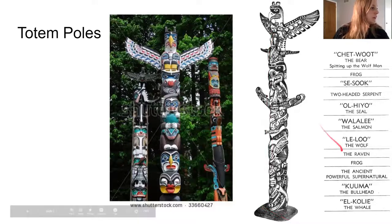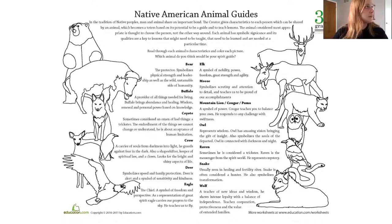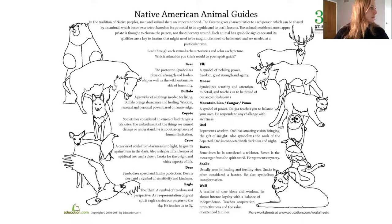You can see it - it's kind of cool. They have different heads of different animals represented. So what they would do is Native Americans would have kind of like animal guides that they would feel connected with. In the tradition of Native peoples, man and animals share an important bond. The creator gives characteristics to each person which can be shared by an animal. So they would pick these for their totem pole as to how they felt like represented themselves. For me, I think I might pick a deer, because a deer symbolizes speed and family protection. Deer is alert and a symbol of sensitivity and kindness. And if you want, you can pause the video so you can see which one you think you would identify with.